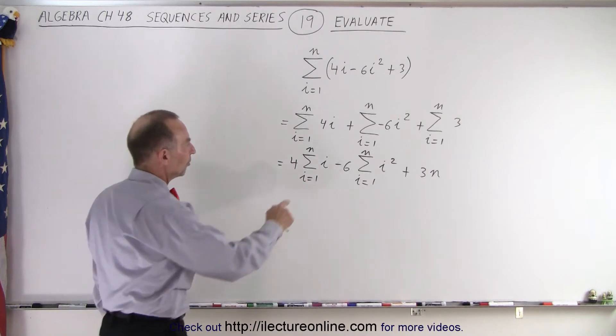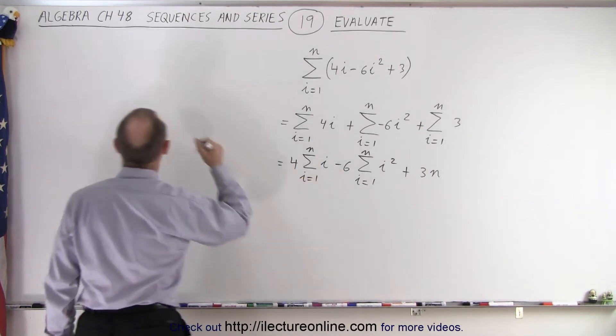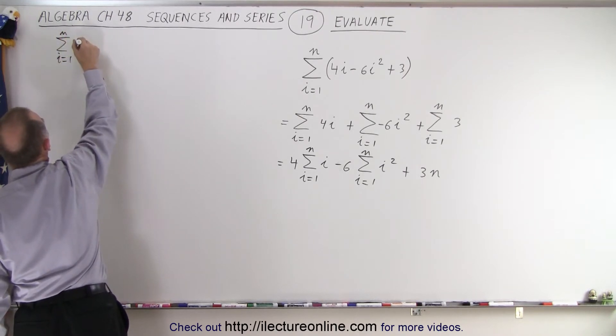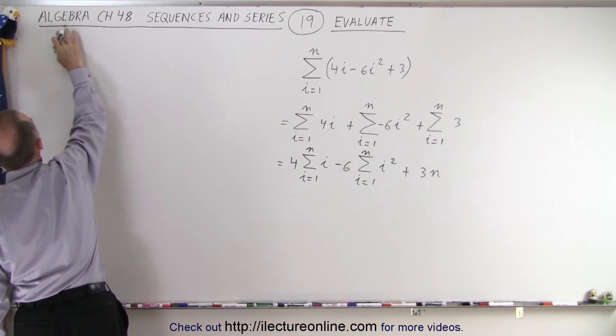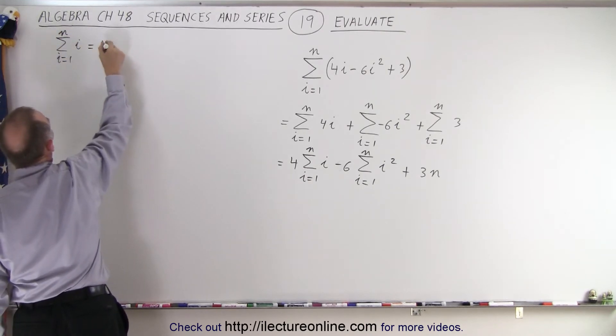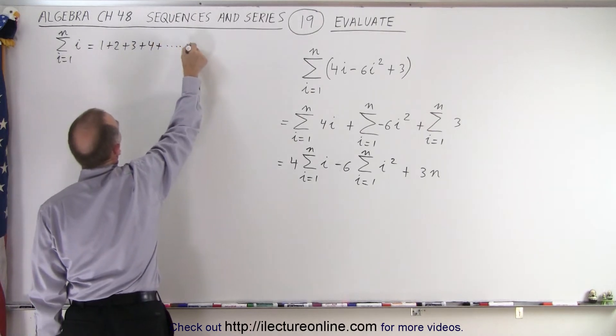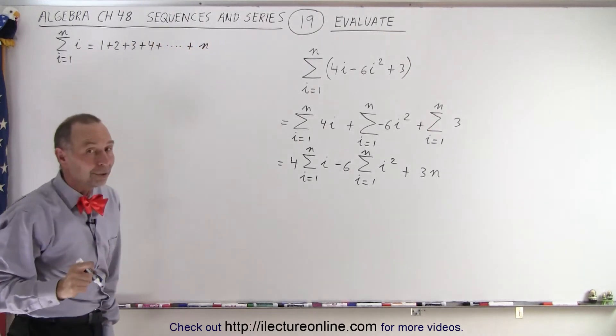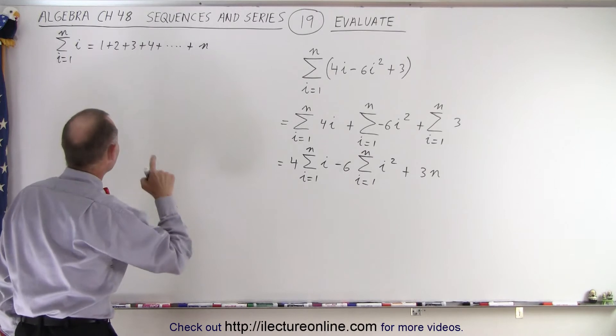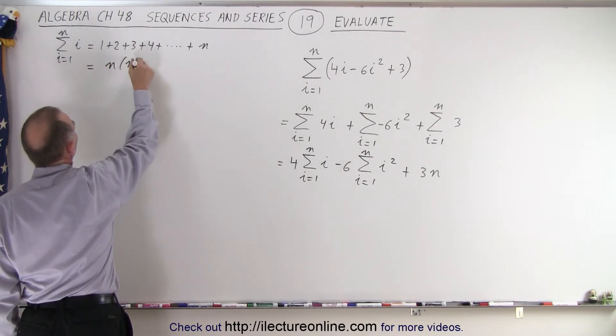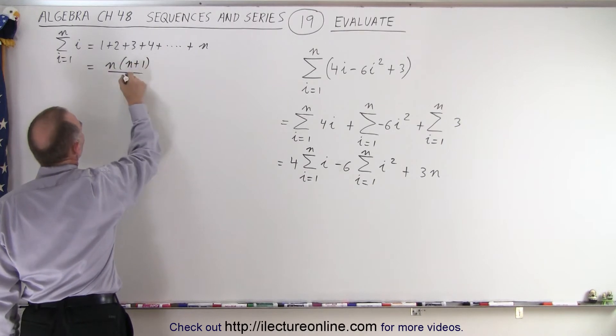Now what is this equal to? Well, the sum from i equals 1 to n of i is equal to 1 plus 2 plus 3 plus 4 all the way up to plus n. And remember from the previous video that this is equal to n times (n plus 1) divided by 2.